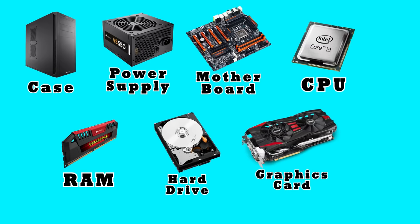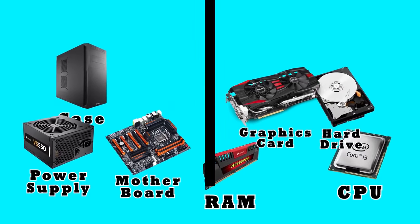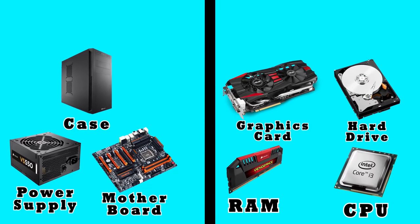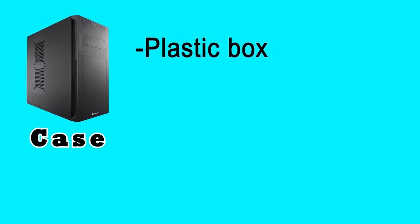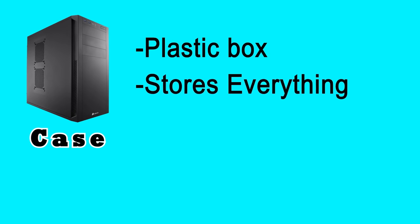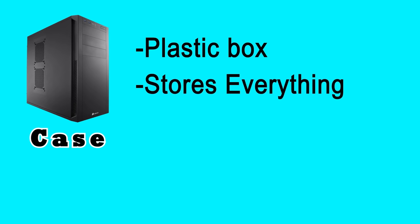These are the fundamental parts of any desktop computer. It may seem daunting at first, so let's separate these into two categories: simple ones and the more complex ones. For starters, let's look at the case. The case is nothing more than a big hunk of plastic that houses everything else. Some of them have more or less physical space, but at the end of the day, all the case really does is provide a nice enclosed system for everything else.